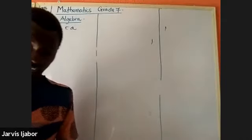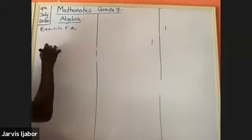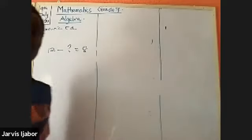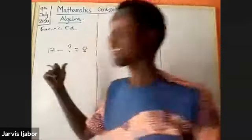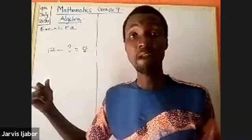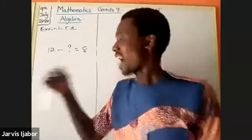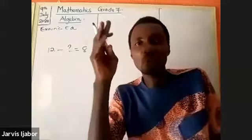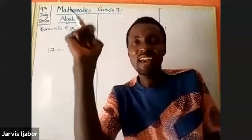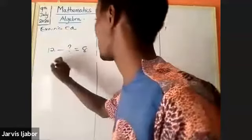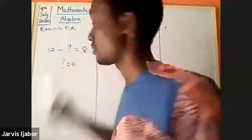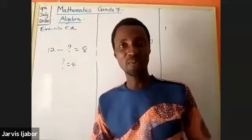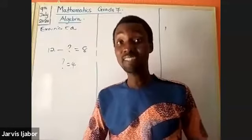Twelve minus a certain number gives me eight. I start from eight and go up to twelve: nine, ten, eleven, twelve — that is four steps. So the answer is four. I hope that is making sense.